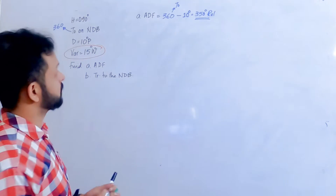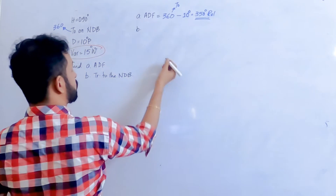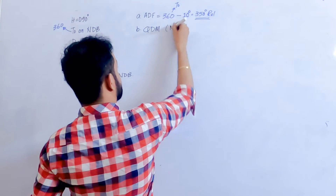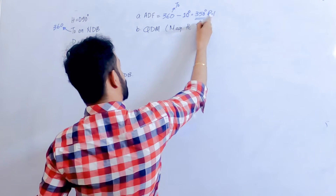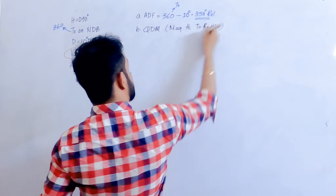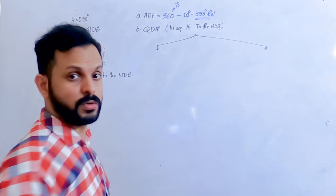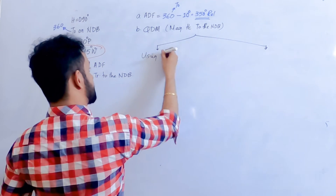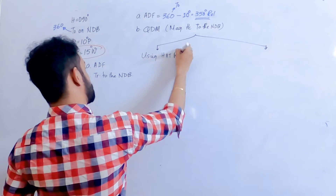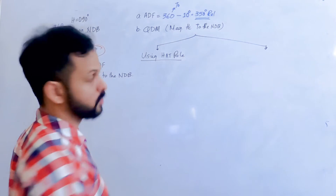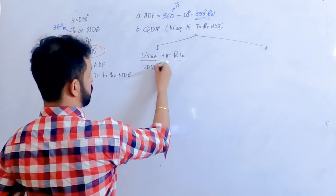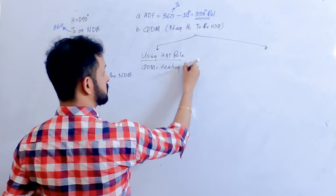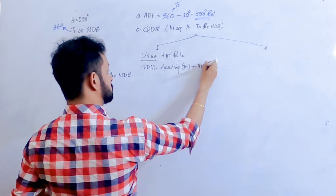Now you're asked to find out what is the track to the NDB. The track to the NDB is basically the magnetic track to the NDB, which is QDM. As we have discussed before, we can find out this QDM using two different methods. The first and simplest method is by using the hat rule, which means QDM equals heading plus ADF indication.